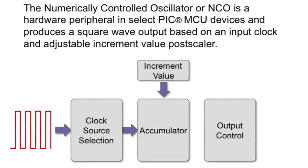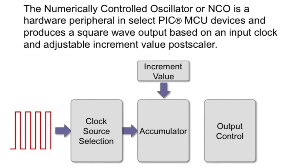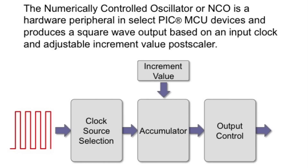The NCO is a hardware peripheral in select PIC MCU devices and produces a square wave output based on an input clock and adjustable increment value postscaler. This method of numerically incremented change offers improved linear frequency resolution when compared to a standard PWM output. This can offer better performance for motor control, switching power supplies, or any typical PWM driven design. The NCO operates by repeatedly adding an increment value to an accumulator, with additions occurring at the frequency of the input clock. The accumulator will overflow with a carry periodically, which becomes the raw NCO output — essentially dividing the frequency of the input source by a constant value, giving you a linear change in frequency.